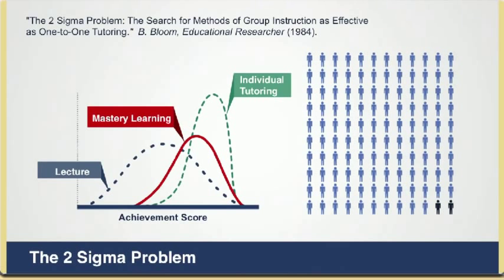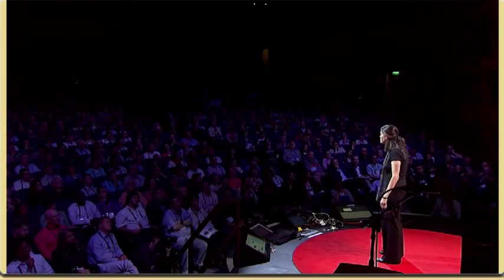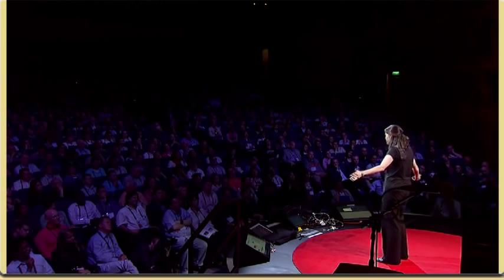Because we cannot afford, as a society, to provide every student with an individual human tutor. But maybe we can afford to provide each student with a computer or a smartphone. So the question is, how can we use technology to push from the left side of the graph — from the blue curve — to the right side with the green curve? Mastery is easy to achieve using a computer because a computer doesn't get tired of showing you the same video five times, and it doesn't get tired of grading the same work multiple times. And even personalization is something that we're starting to see the beginnings of, whether it's via the personalized trajectory through the curriculum or some of the personalized feedback. So the goal here is to try and push and see how far we can get towards the green curve.